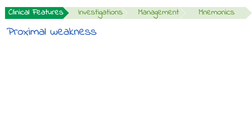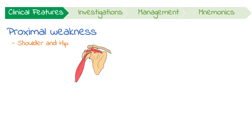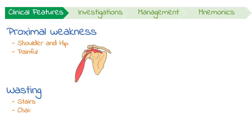Initially, people experience proximal muscle weakness, affecting the shoulder and pelvic girdle, which is often but not always painful. This can progress to muscle wasting, resulting in difficulty climbing stairs or standing up from a chair.